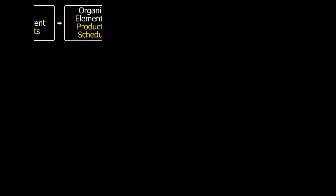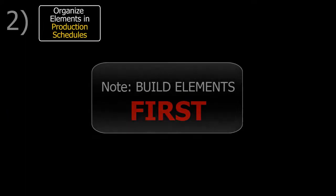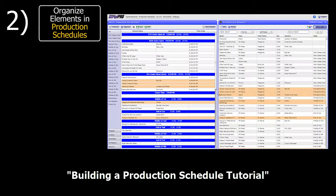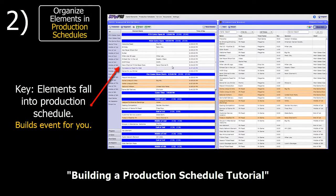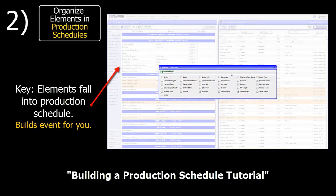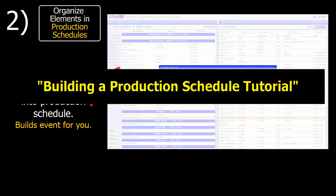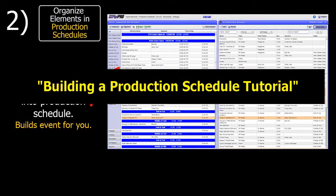Once you have built your elements — and remember, build your elements first — the next step is to build your production schedules in increments. The key here is that by building your elements, they will fall neatly into place within each production schedule, building the events for you. Within the production schedule, elements can be rearranged and edited. Be sure to watch the building a production schedule tutorial to learn more.